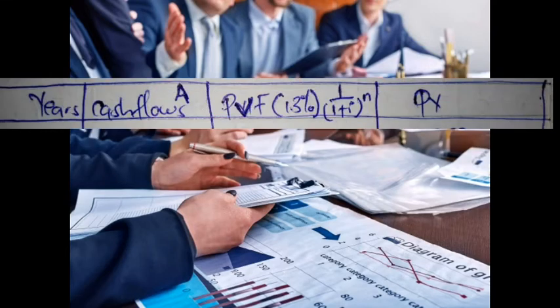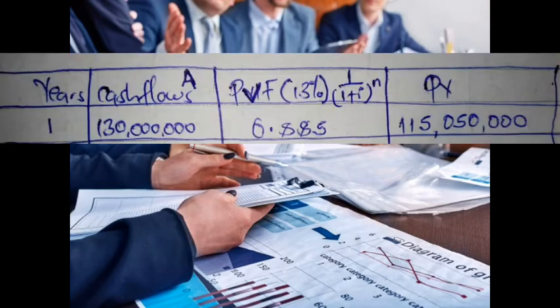Our table will have four columns: the column of years, the column of cash flows (representing A), the column of present value interest factor calculated using the formula 1 / (1 + i)^n with interest at 13 percent, and the column of present value.